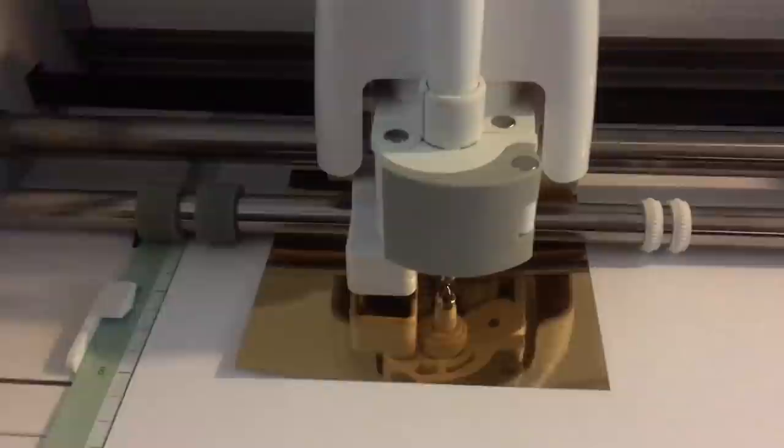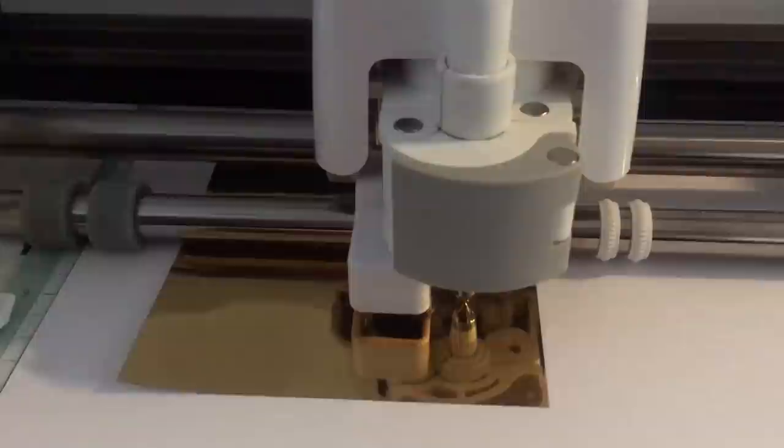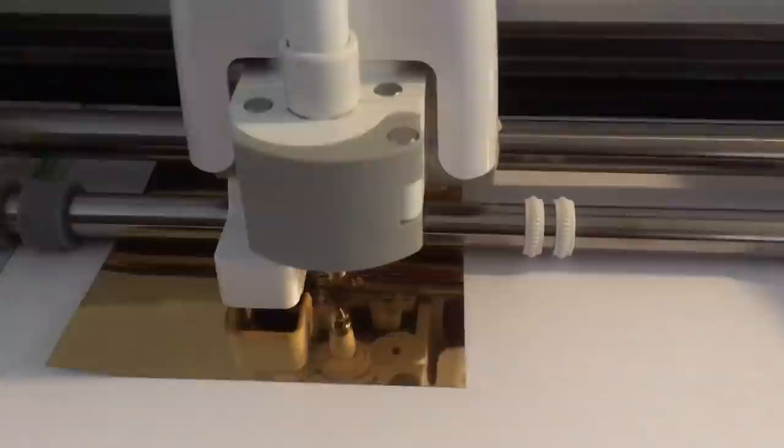If everything is lined up correctly, the scoring tool would be pressing our design into the foil. I'm using the Explorer 1 for this demo, in case you're thinking that my machine looks different than yours. While this is working, let's talk about something else.